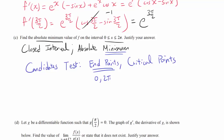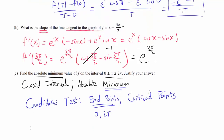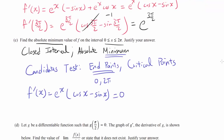To find the critical points, we set f prime equal to 0. f prime of x is e to the x times cosine of x minus sine of x. Setting this equal to 0, we get e to the x equals 0 or cosine of x minus sine of x equals 0. Since e to the x is always positive, that case won't happen.